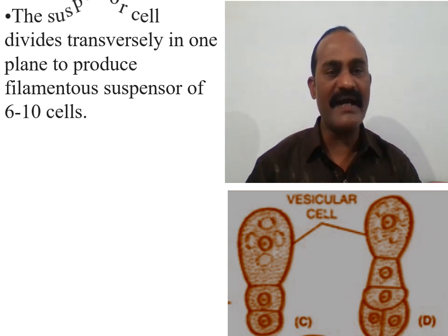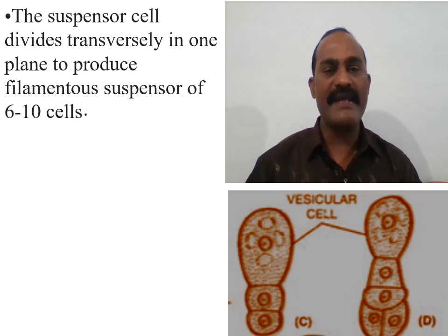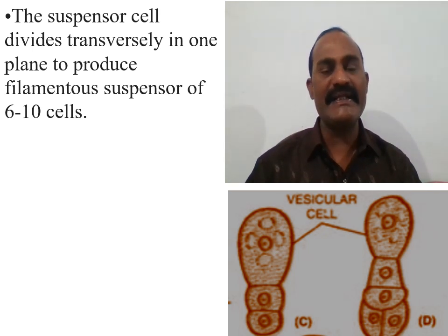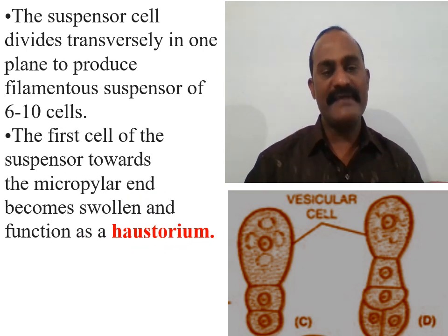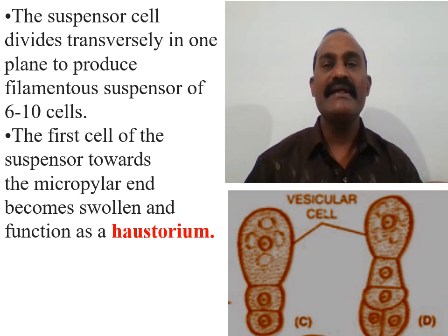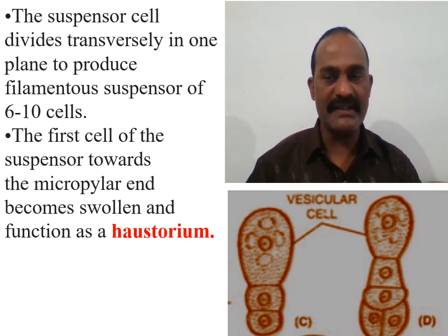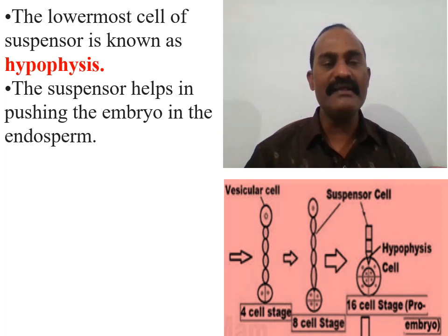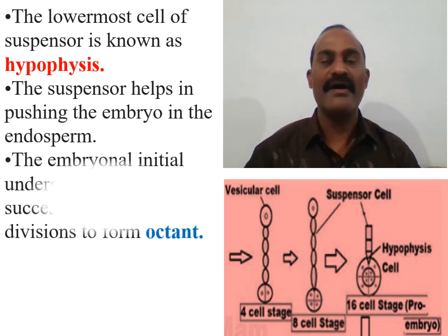The suspensor cell divides transversely in one plane to produce a filamentous suspensor consisting of six to eight cells. The micropilar cell of the suspensor — the first cell towards the micropyle — becomes swollen and forms the haustorium, a structure which digests the endosperm and provides nutrition to the developing embryo. The lowermost cells of the suspensor are called the hypophysis, which push the embryo towards the endosperm so that continuous nutrition is available.